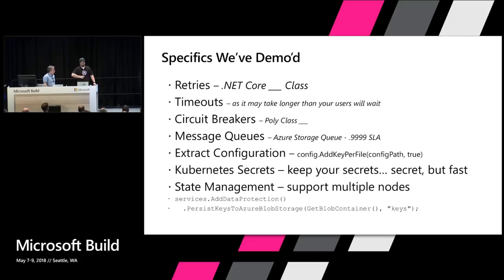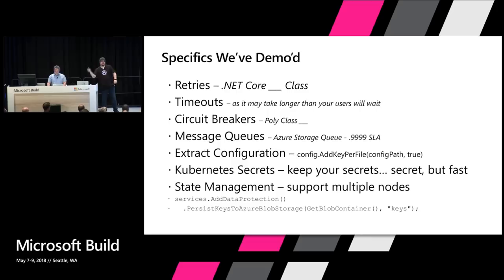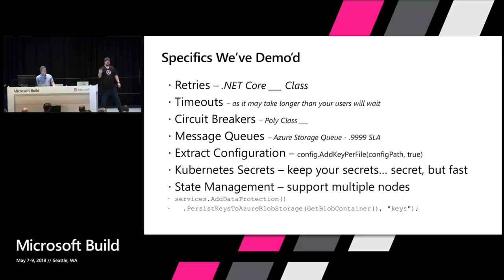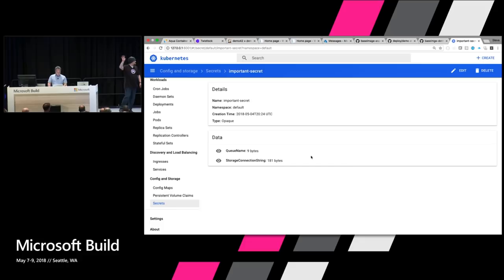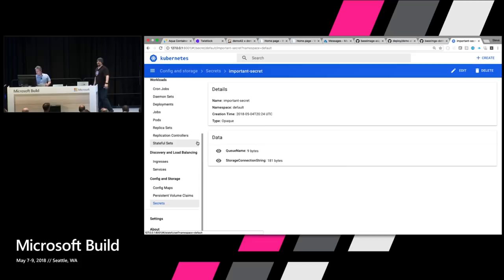We used Azure Storage Queues — they have a really good SLA and don't go down very often, with geo-replicated queues designed for a ridiculous number of nines. In the code, we call AddKeyPerFile, which allows you to load Kubernetes config maps and secrets into your .NET Core application. All our connection strings come from Key Vault — injected into the container at runtime in a memory-only volume mount, loaded into the application without ever being in any config files or on disk outside of the Key Vault instance.